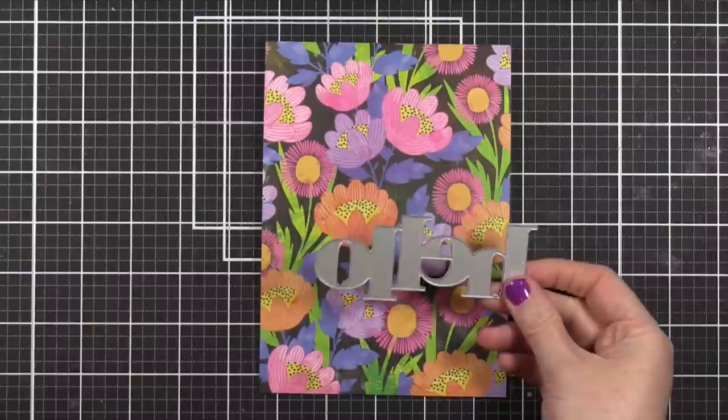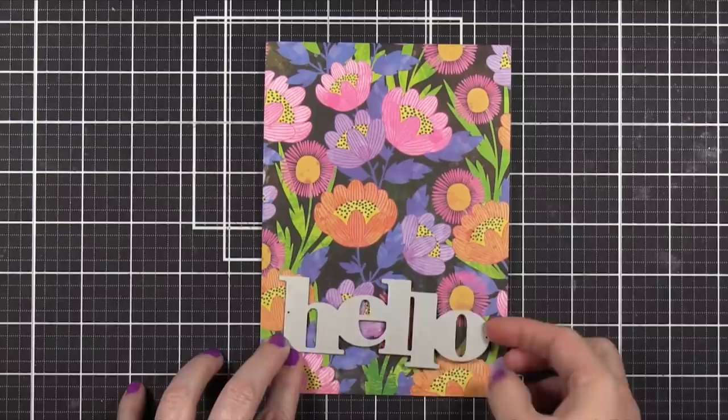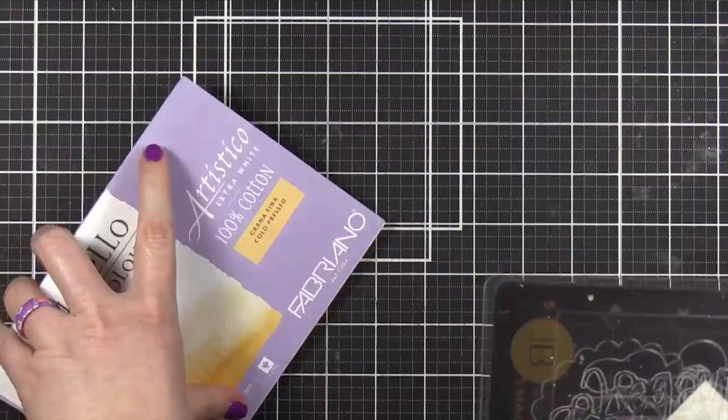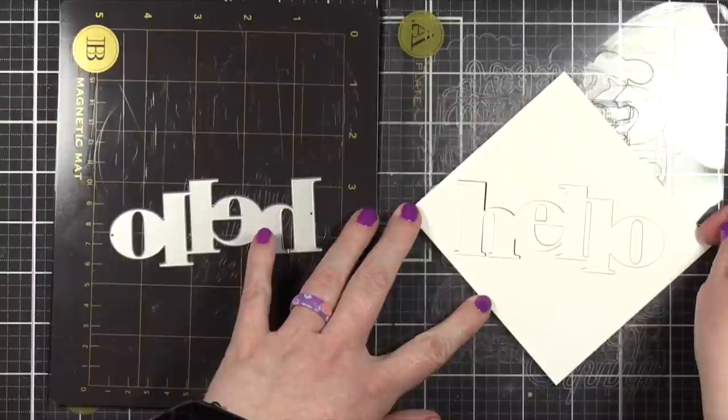I really wanted to use this pattern paper because it's so beautiful. It's from Vicki Bouten's Color Study 6x8 paper pad. And then I thought I'd use the Hello dies from that same die set that I used in the video on Friday as well.